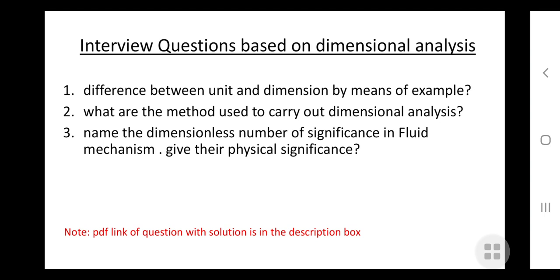This method expresses the variables related to dimensional homogeneous equations. It is basically an upgraded version of the Rayleigh method which simplifies complex equations. According to the theorem, if there are n variables in a physical phenomenon and if these variables contain m fundamental dimensions, then the variables are arranged into n minus m dimensional terms.